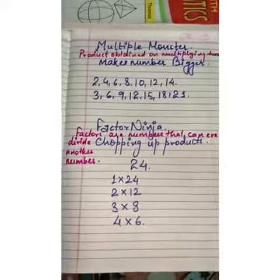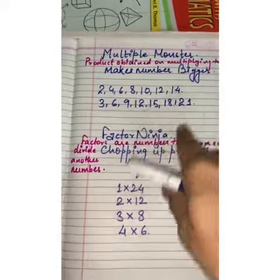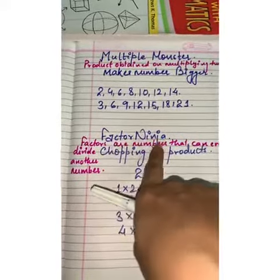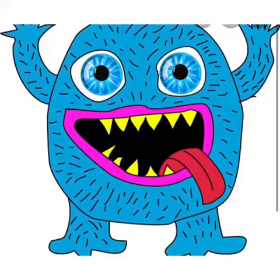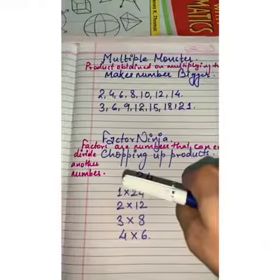That is, we will say multiple as multiple monster, and factor as factor ninja. Now, here is the picture of a monster, right? Yes, and multiple monster that is makes number big.